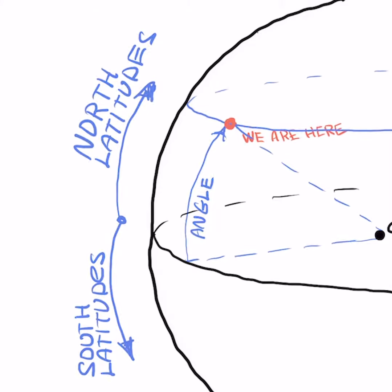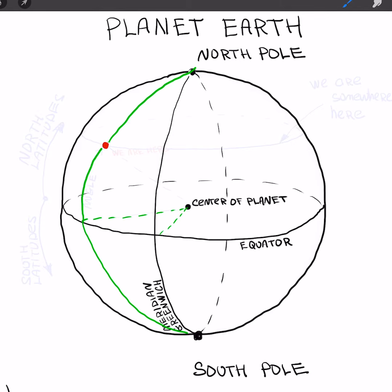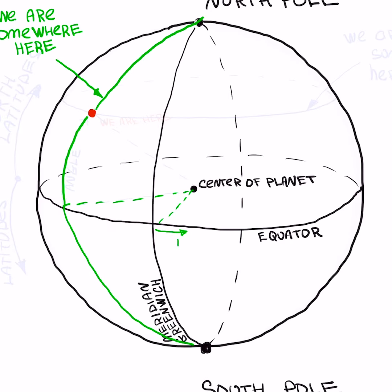Longitude is an angle between two directions as well — to the Greenwich meridian and to your marine vessel. It is measured in two directions from the Greenwich meridian: eastward and westward.